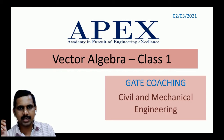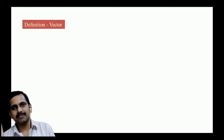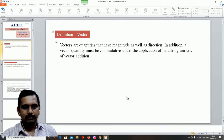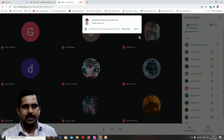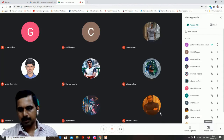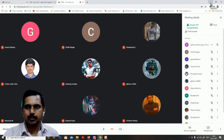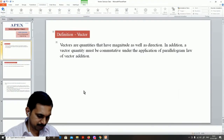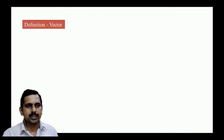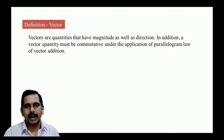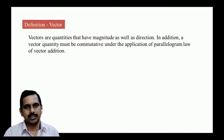Let us start with vector algebra. The first question is: what is a vector? A vector is a quantity that has both magnitude and direction. However, having magnitude and direction alone does not automatically qualify something to be a vector.